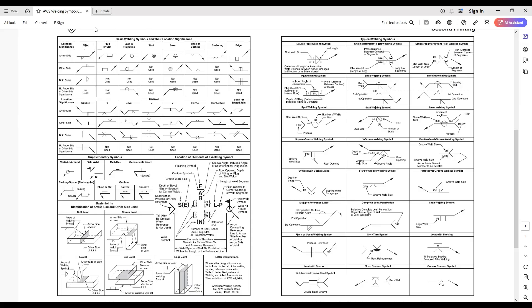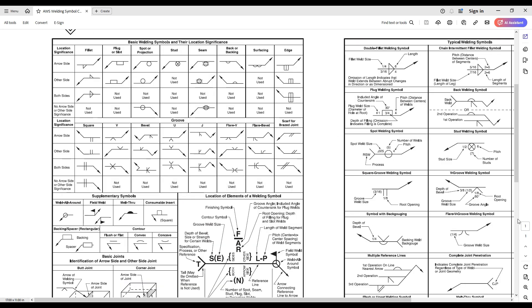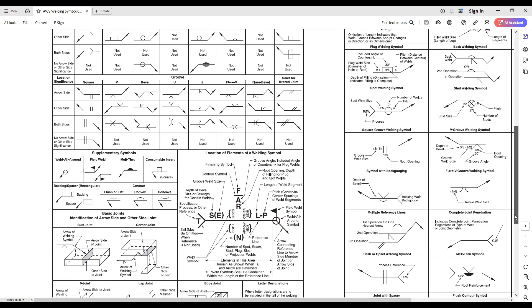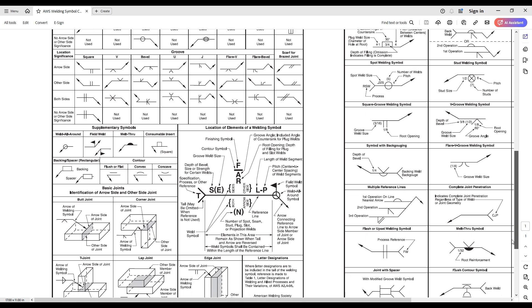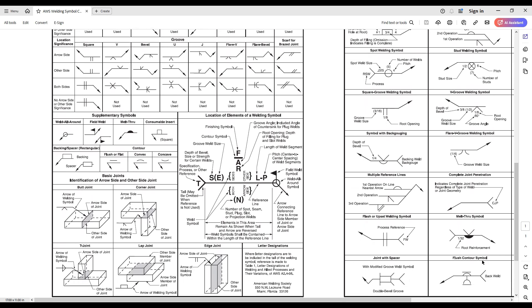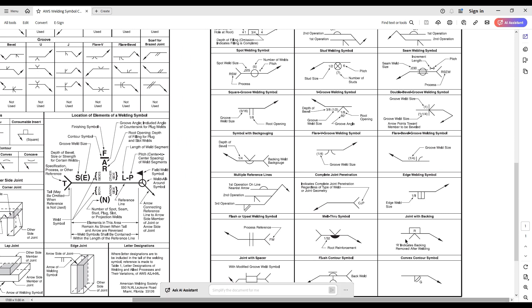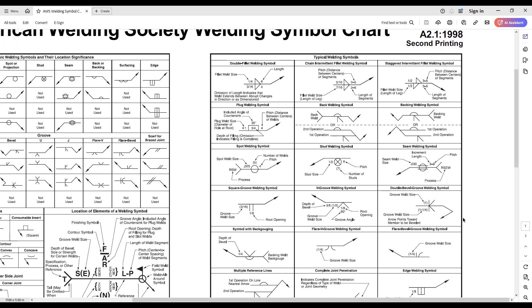The next is welding symbol chart. This is the chart that is absolutely necessary for welders. The download link is added in the description, or you can google it. It looks very complicated, but you don't need to worry about this at all. You use this chart if you meet any welding symbols you don't understand. I want you to understand the following basic information only.